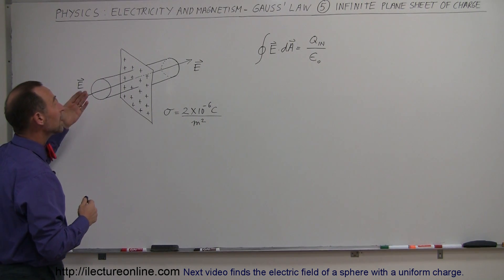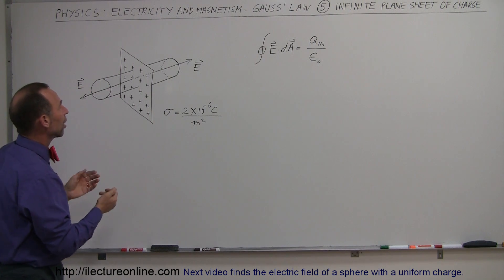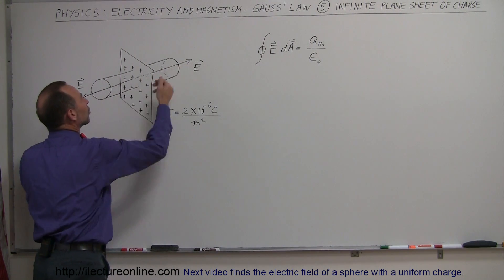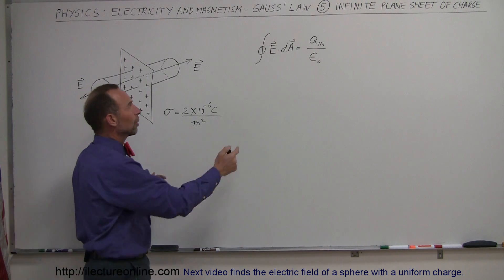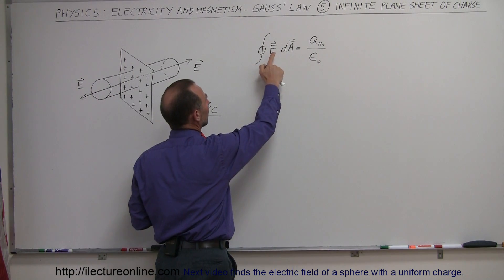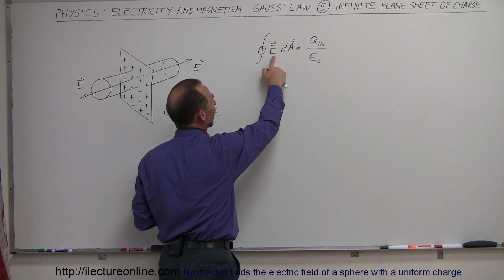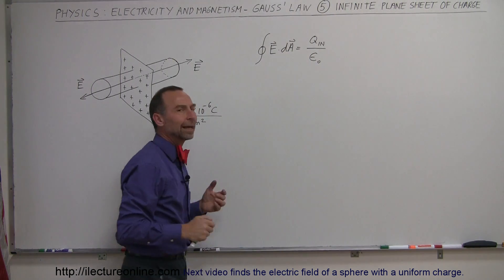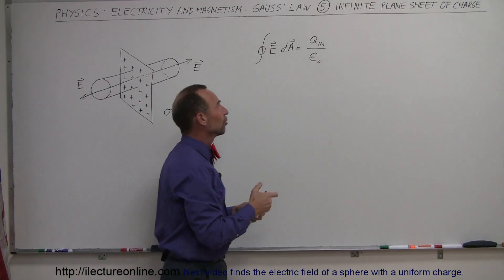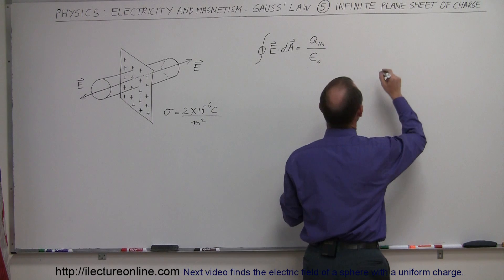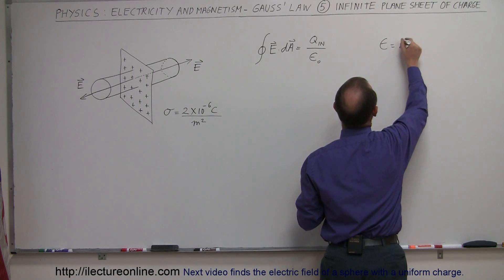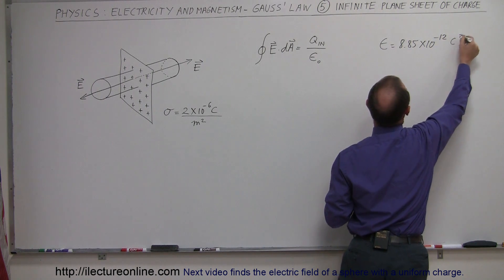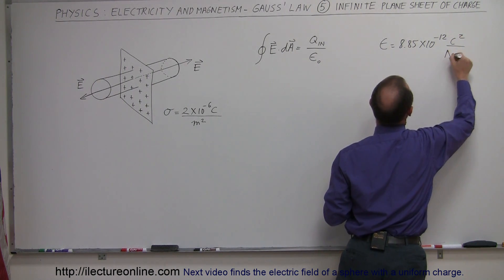We're going to use Gauss's law to find the electric field emanating from both sides of the sheet. The equation is that the surface integral of the electric field strength times the area equals Q inside divided by epsilon sub nought. Epsilon sub nought is the constant 8.85 times 10 to the minus 12 coulombs squared per newton meter squared.